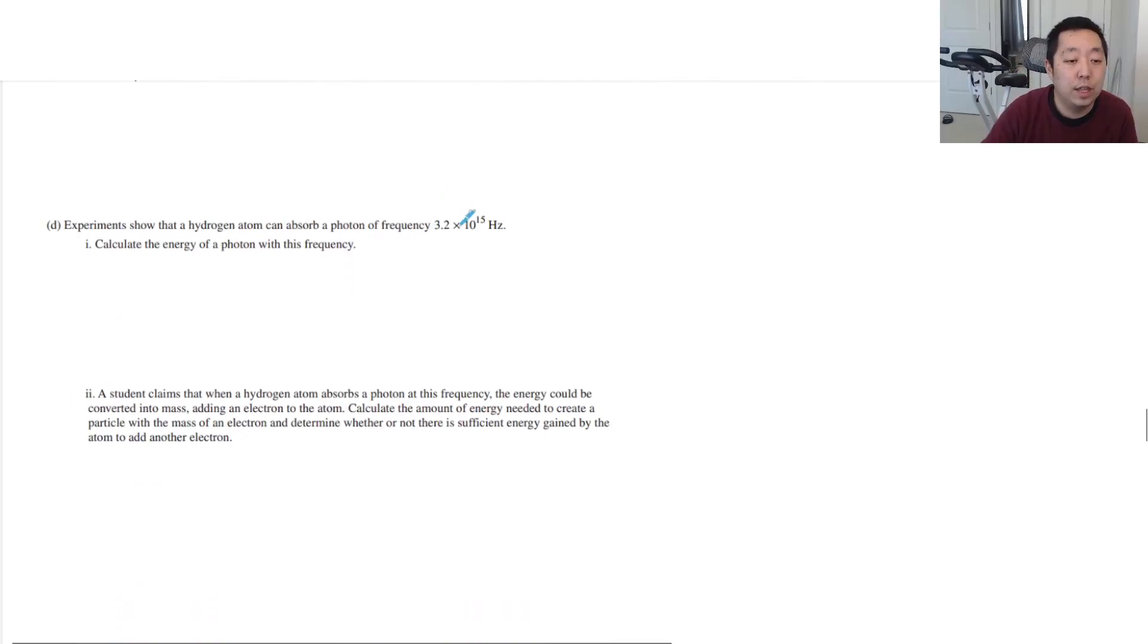Experiment showed that a hydrogen atom can absorb a photon of frequency this. Calculate the energy of photon with this frequency. Energy of photon is just HF. They give you the frequency, and I don't remember what H is. I always got to look this up. We'll do it in 6.63 times 10 to the minus 34 joule seconds times 3.2. Actually, let's do an eV. I think eV is more traditional when energies are this small. So I'm going to do the eV version, which is 4.14 times 10 to the minus 15 eV seconds times 3.2 times 10 to the 15 hertz. Let's just multiply those out. I get 13.2 eV.